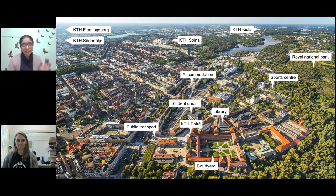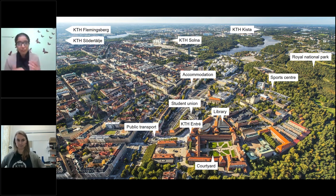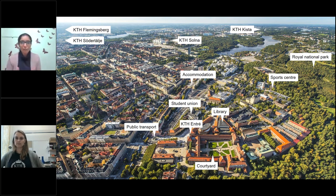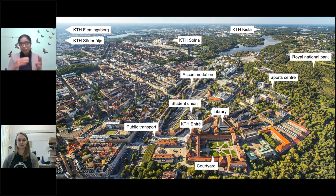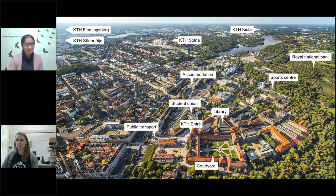KTH has five campuses in and around Stockholm. The main campus is located in central Stockholm next to the Royal National Park. On the main campus you'll find the KTH Library, the Student Union Building, and the KTH Entree. KTH Entree is the main point of contact for keys and your contract for housing - everything can be collected on arrival from there. You can also see the KTH building in the middle bottom part of the map.